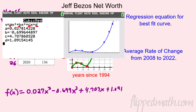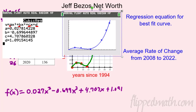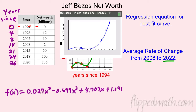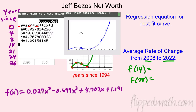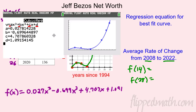Now that we have the model, we can use it to make predictions. Our question asks for the average rate of change. I want to find it from 2008 to 2022. What year is 2008 since 1994? That's 14 years, so we need f(14). And 2022 would be 28 years after 1994, so we need f(28). Let's go to the calculator for help — I don't want to evaluate that cubic by hand.